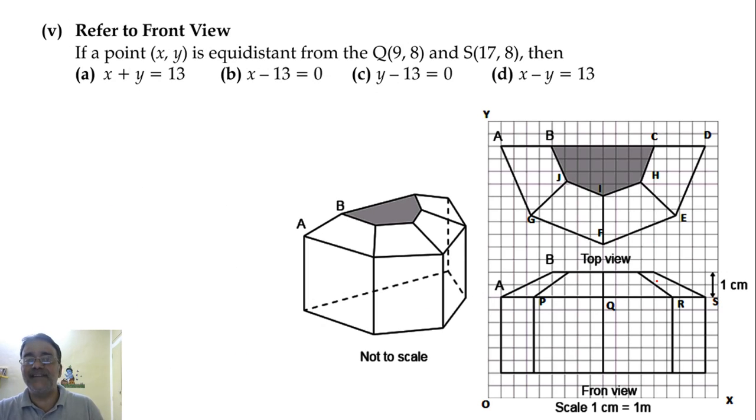Refer to the front view. If a point (x, y) is equidistant from the point Q and S. Q is this point here and S we already got in the second part. The coordinate is (17, 8) and it is already given in the question also: Q(9, 8) and S(17, 8). Then x + y equals to 13. Four options are there. So let us take (x, y) is equidistant from these two points. So I'm going to take P. So PQ is equals to PS. According to the question, PQ equals PS. So if we take square, if we take square, then we have to write square root. So we'll square on both sides, that is PQ² equals PS².